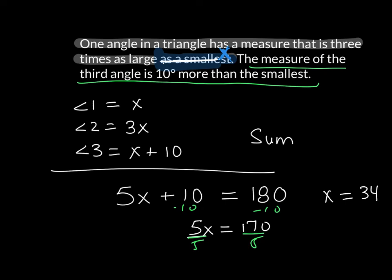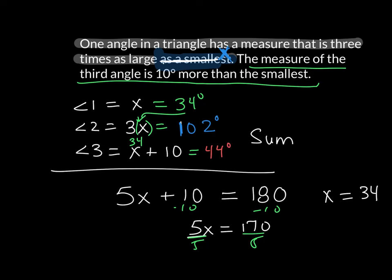So the first angle is 34 degrees. To find angle 2, I plug 34 in for X: 3 times 34 is equal to 102 degrees. For the last angle, 34 plus 10 gives me 44 degrees. So depending upon what they ask you, I have the smallest angle, the largest angle, and the angle in the middle.